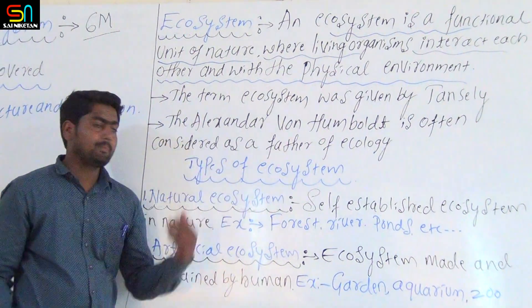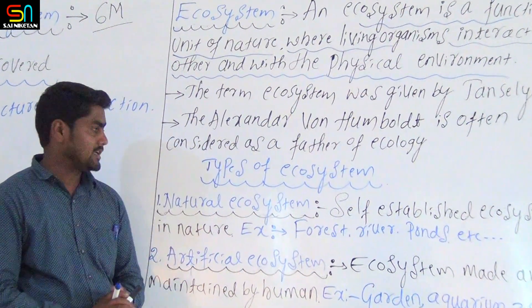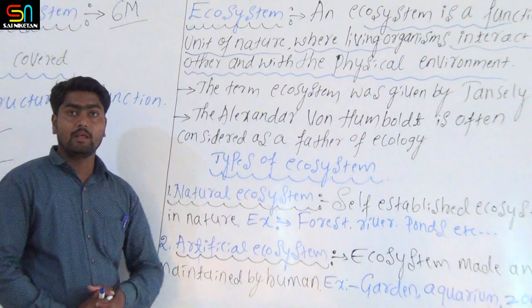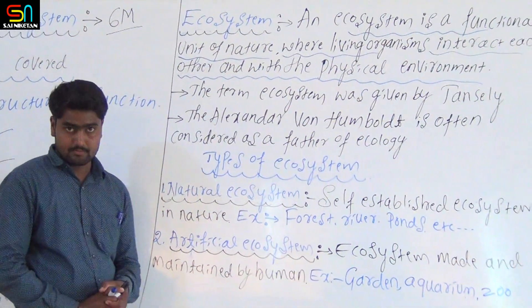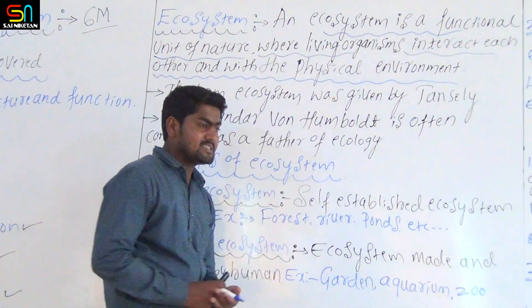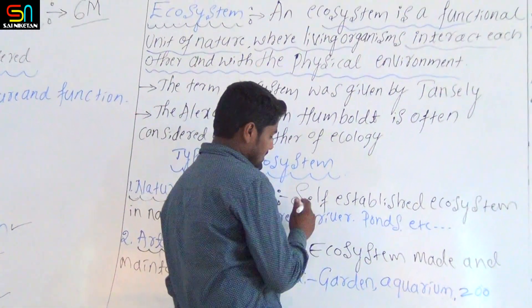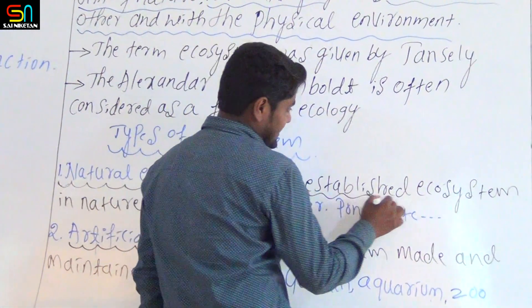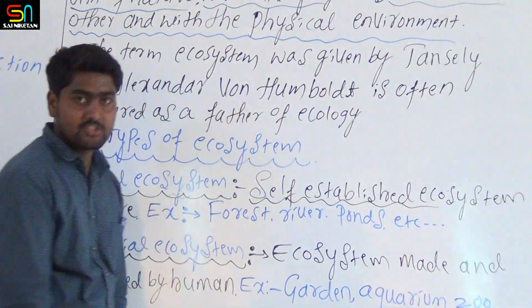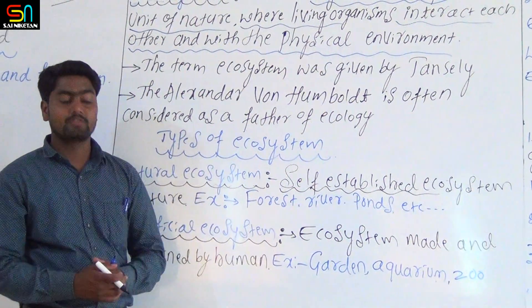Types of ecosystem. First one: natural ecosystem. A self-establishing ecosystem found in nature — that is called a natural ecosystem.